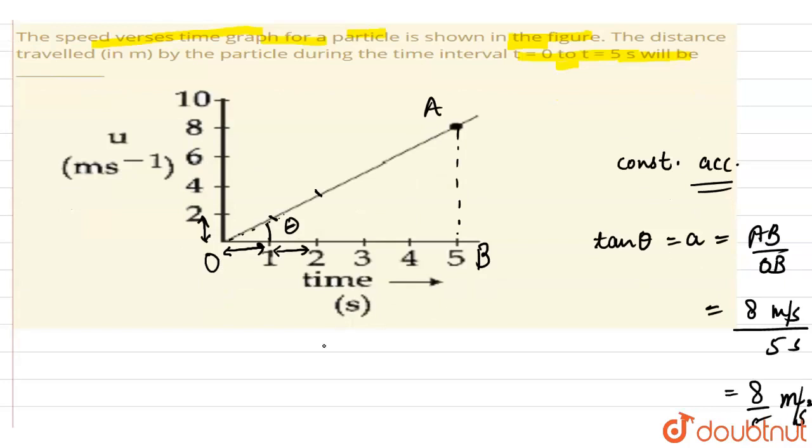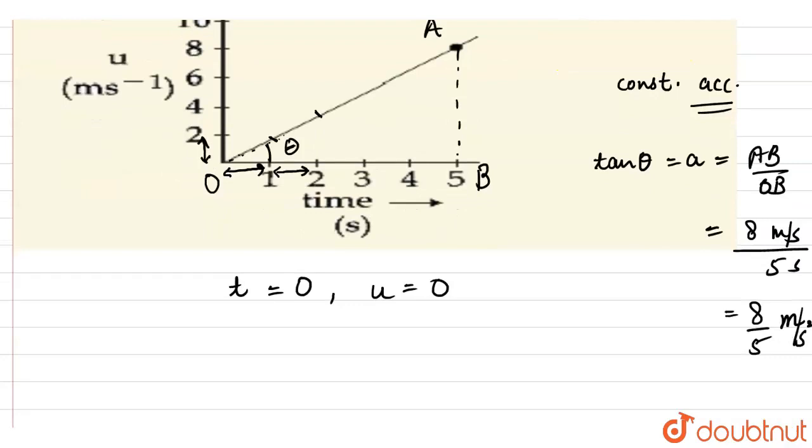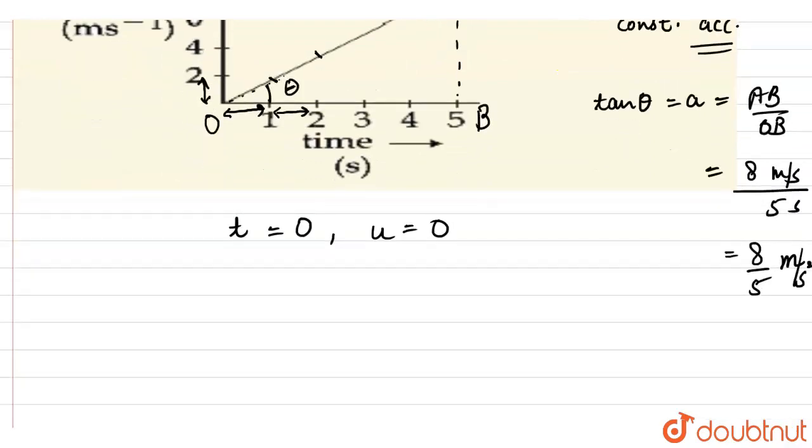Now here we can see that at time t equals 0, the velocity of particle is 0. Now we can apply the second equation of uniformly accelerated motion which is s equals ut plus half at square.